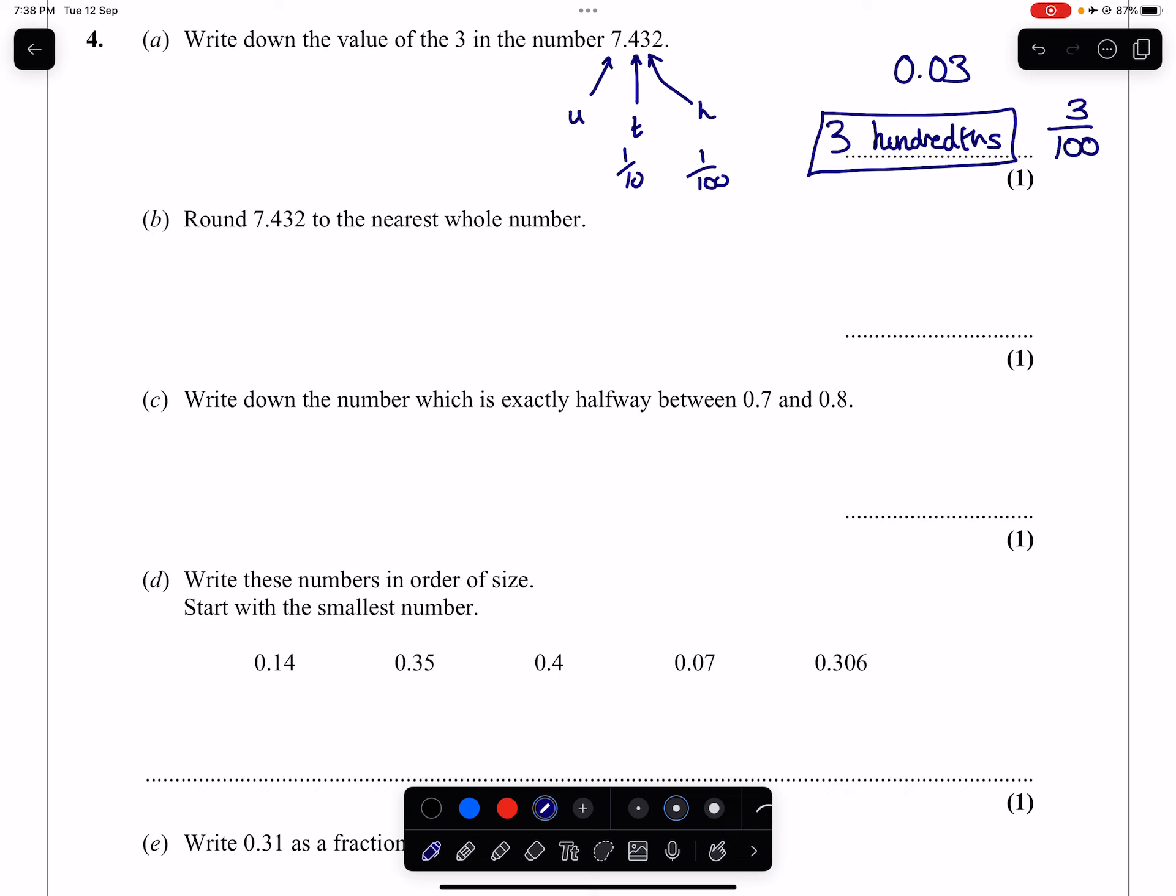Part B. Round 7.432 to the nearest whole number. So with this being the units column and the decimal point following it, that is where we're going to round in order to do the rounding. That 4 will not change that 7, which means we're going to be left with a 7, and that is it. 7 is that number rounded to the nearest whole number.